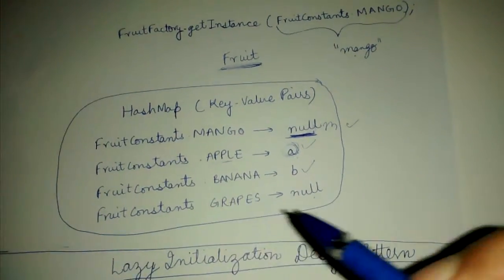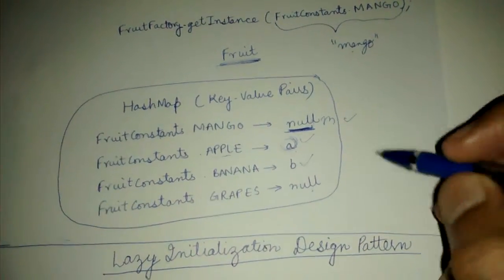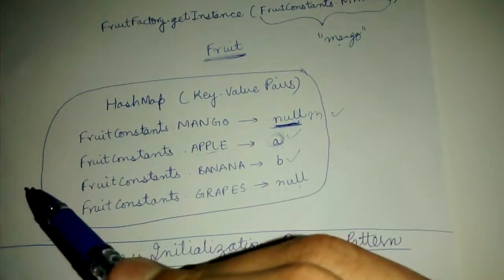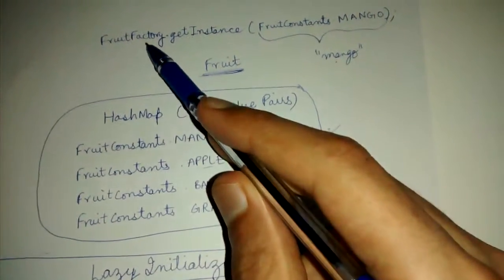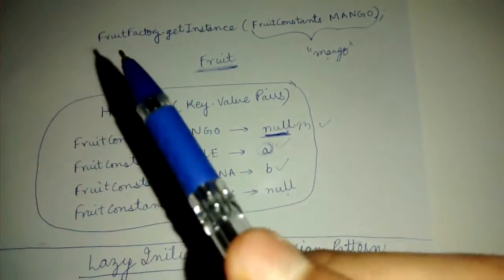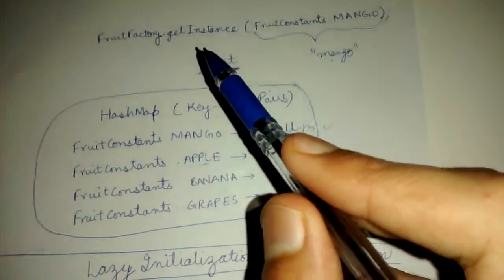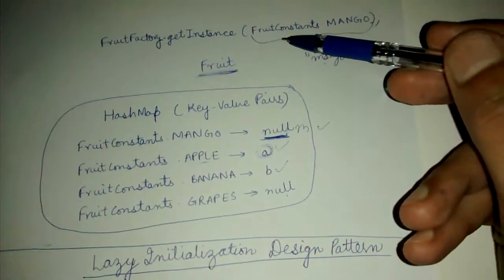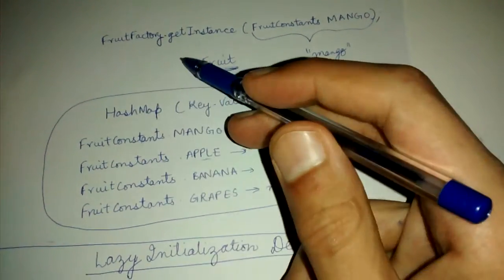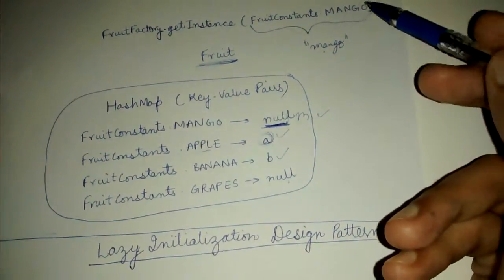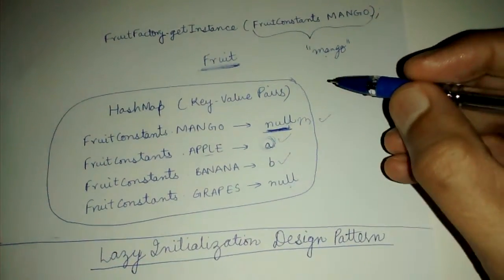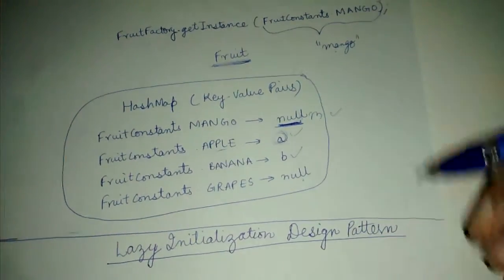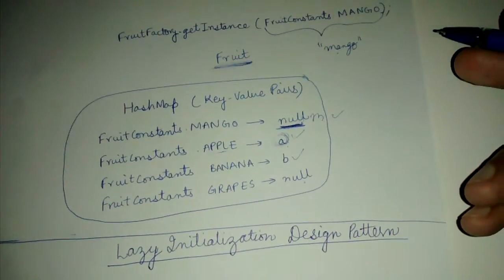Let's say we are running an application on our computer which is using this fruit factory class. Whenever the user asks for a fruit, like fruitFactory.getInstance(FruitConstant.MANGO), we create a new fruit with the name as mango and return it to the user.